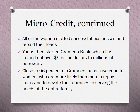Yunus then started Grameen Bank, which has loaned out over $5 billion to millions of borrowers. Close to 96% of Grameen loans have gone to women, who are more likely than men to repay loans and to devote their earnings to serving the needs of their family. Women have been socialized to believe they are responsible for their children much more than men have.